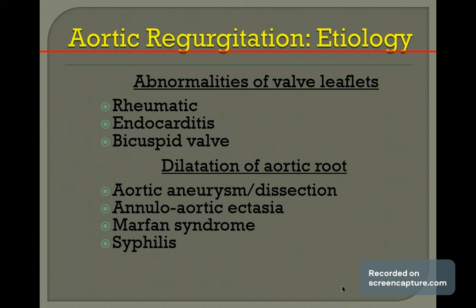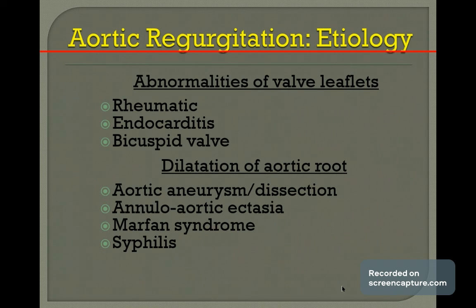As far as abnormality of leaflets is concerned, these are semilunar valves, and diseases affecting directly on the valve — either the superior surface or the inferior surface — are the primary diseases. These include inherited disorders, degenerative disorders, metabolic disorders, storage disorders, etc. Rheumatic is one of the most common disorders affecting the aortic valve.